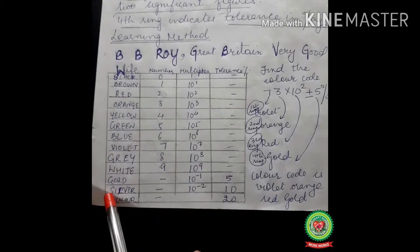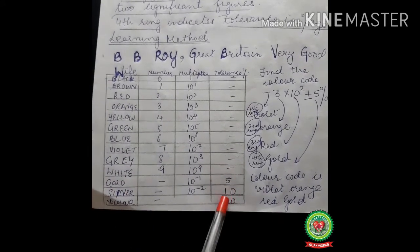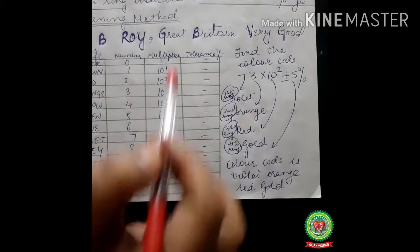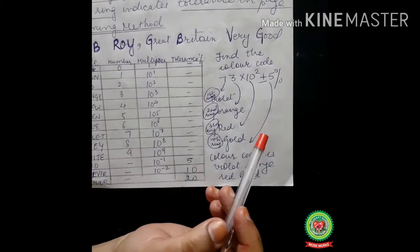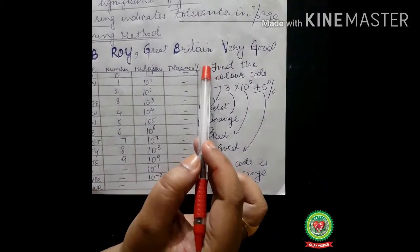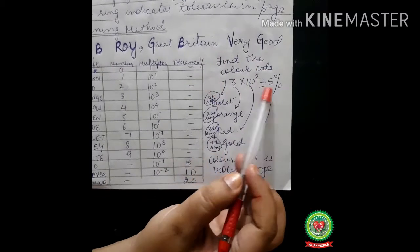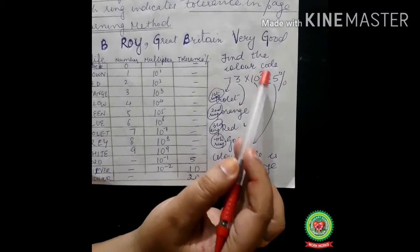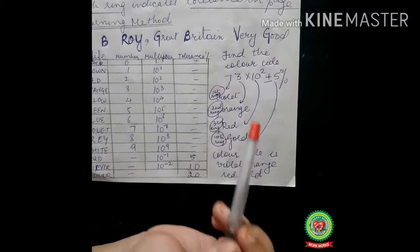Now if we take an example, we will understand things better. First one: find the color code. This is given: 73 × 10² ± 5%. This is the way to write this color coding. If I say 7 here, 7 is violet. I have written here violet, moreover 7 is the first ring.